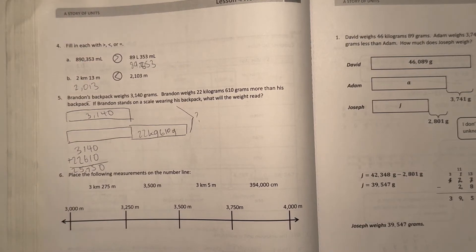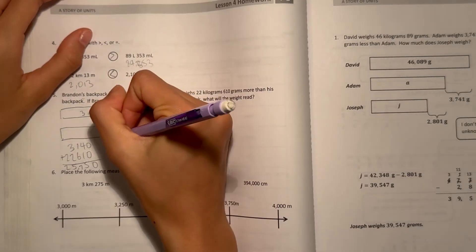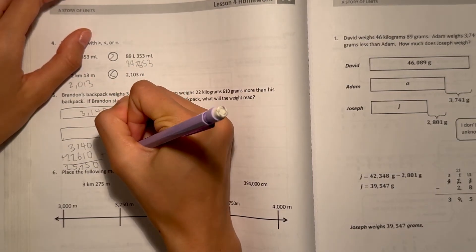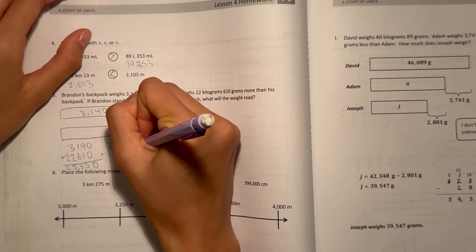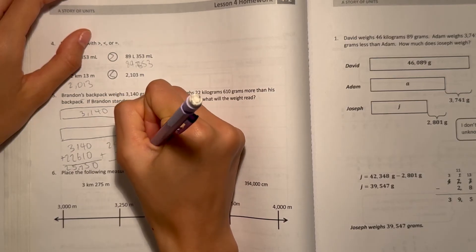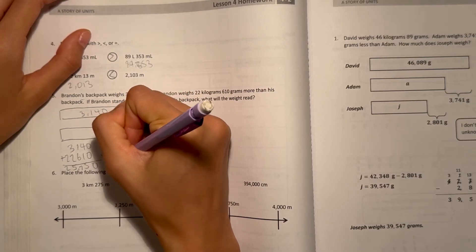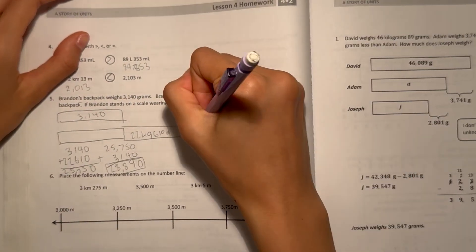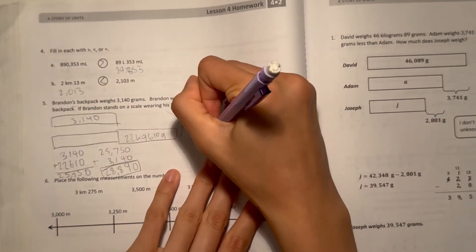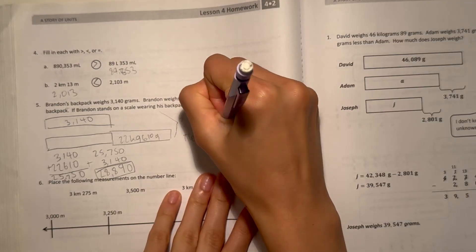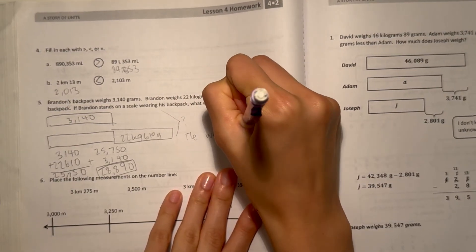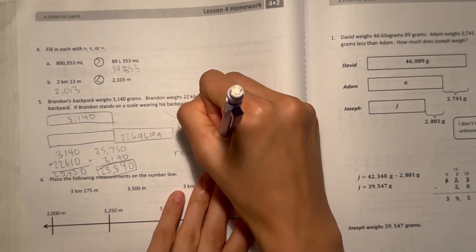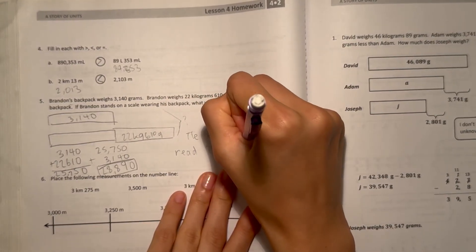But then now we want to find out how much they weigh all together. So 25,750 plus the 3,140. That's 0, 9, 8, 8, 2. 28,890. So that means the weight will read 28,890 grams.